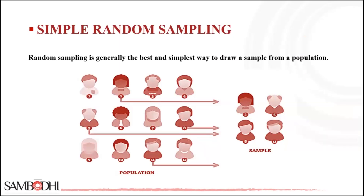We'll start with simple random sampling. You can see the image and later we'll discuss about it as well. Random sampling is generally the best and simplest way to draw a sample from the population. You can see there's a population here, and out of which they have selected 2, 5, 8, and 11 — those are random numbers.